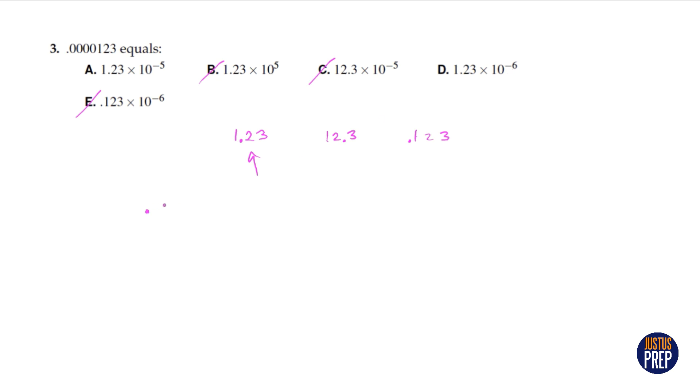So if we just write out this number, 0, 0, 0, 0, 0, 1, 2, 3, we can count the spaces it takes for us to get right here. So that's 1, 2, 3, 4, 5. So that's going to be 1.23 times 10 to the negative 5. So the answer is A.